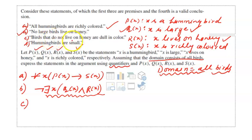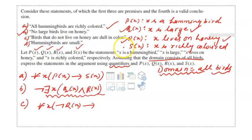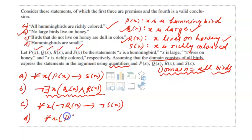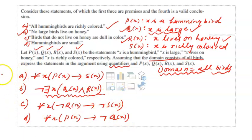Statement C is 'birds that do not live on honey are dull in color.' For all x, if negation of rx — x does not live on honey — then negation of sx — x is dull in color (negation of richly colored). Statement D is 'hummingbirds are small': for all x, px implies negation of qx, since qx means x is large.